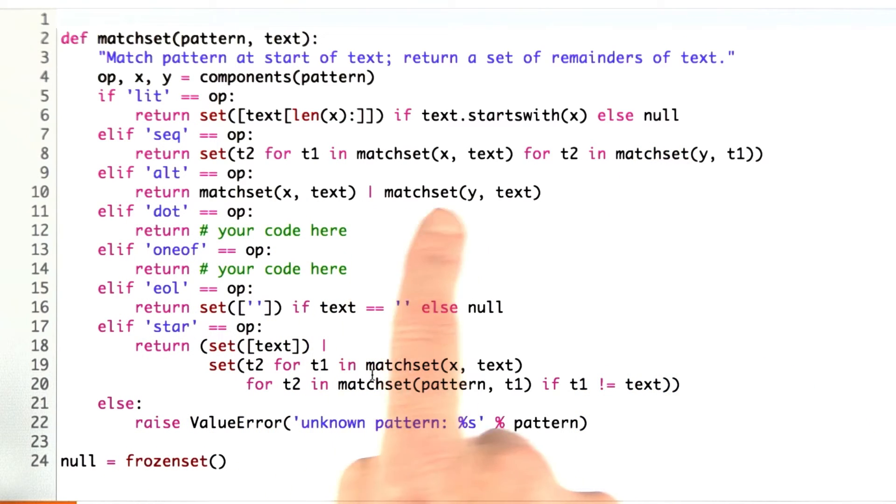The alternative is particularly nice. It says if we have an alternative between x and y, we just return the union of those two match sets. This character, the or bar, means union in Python, a union of two sets.